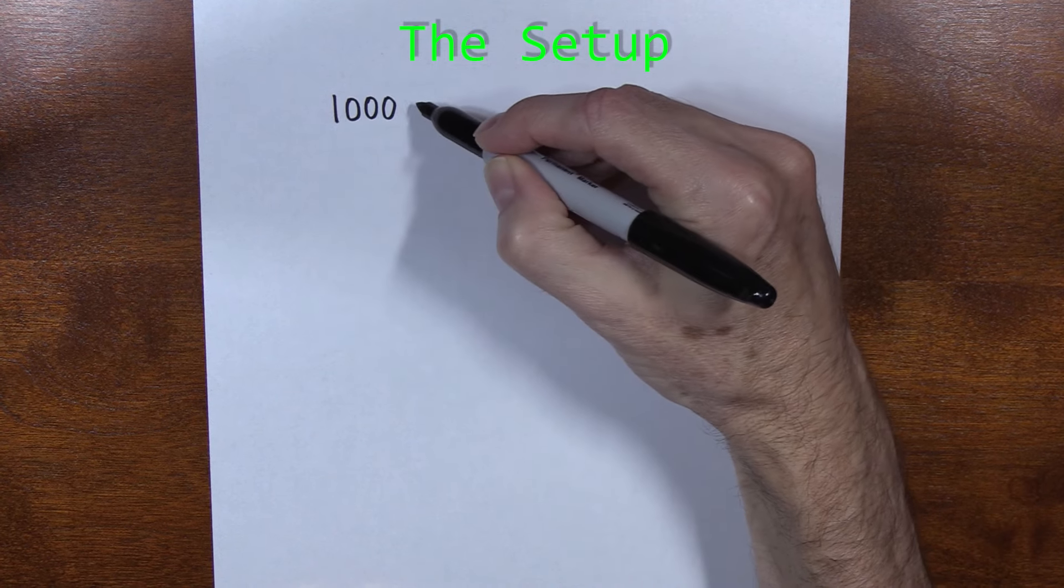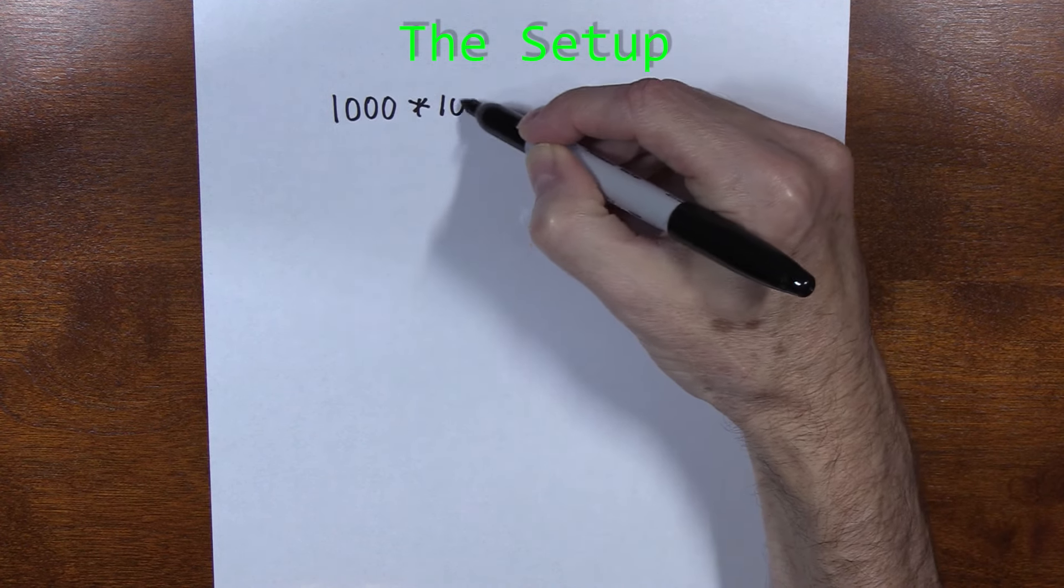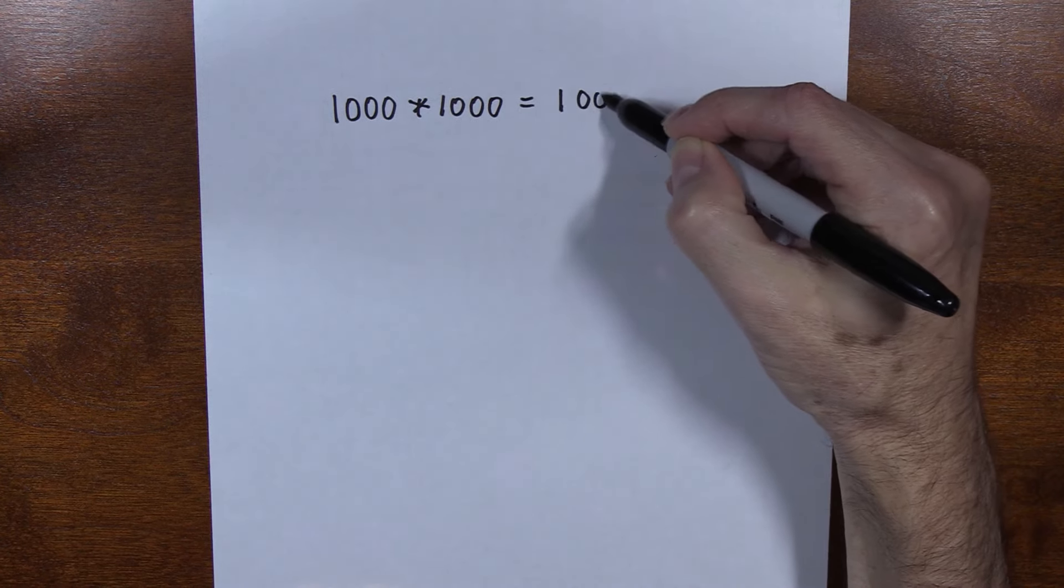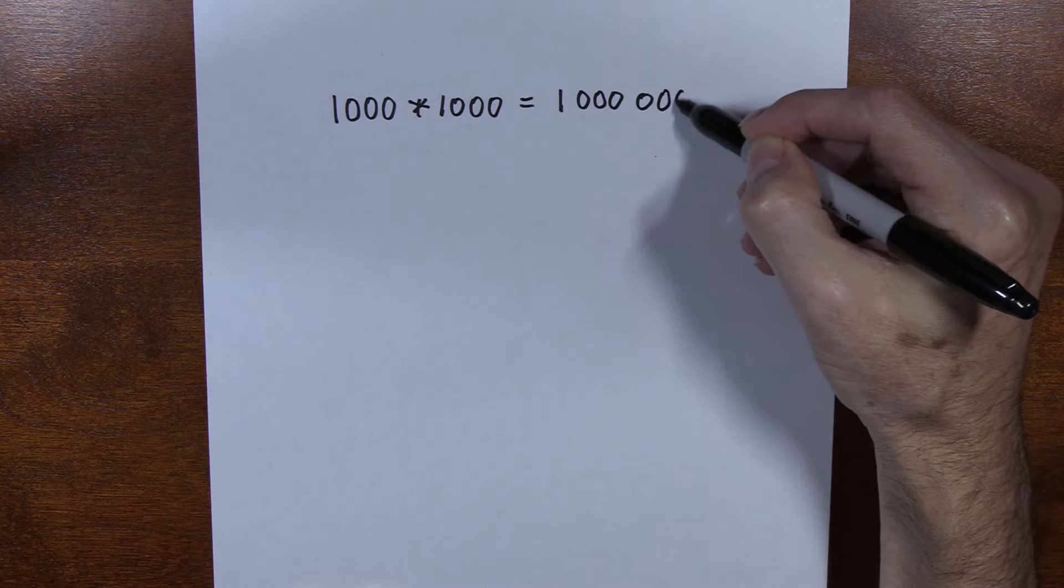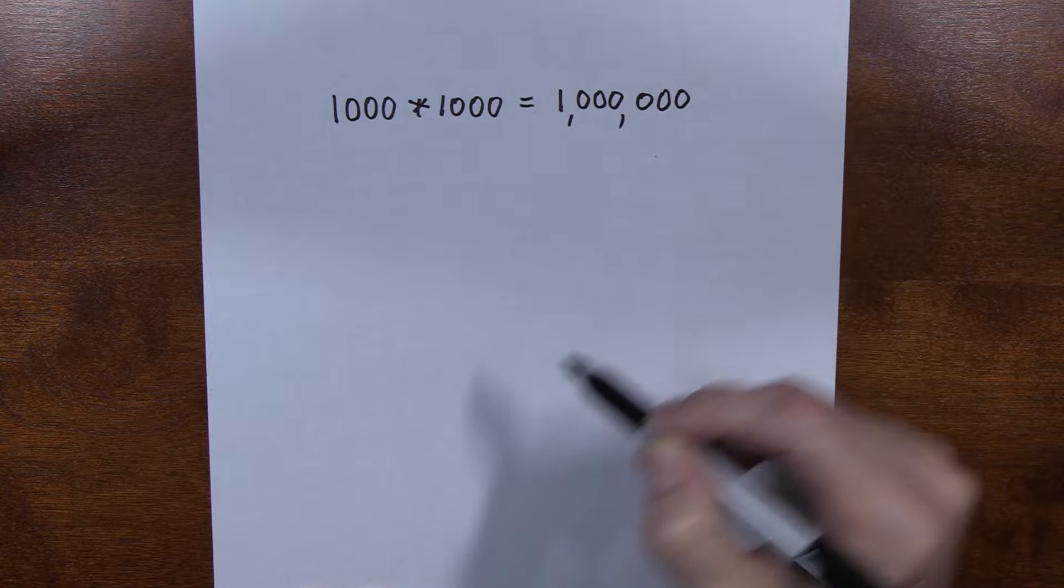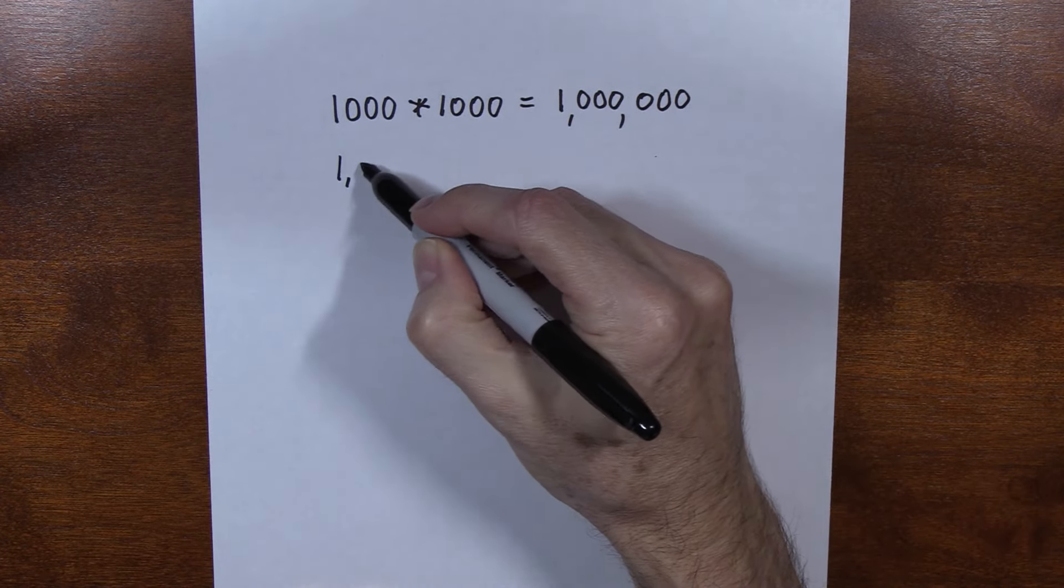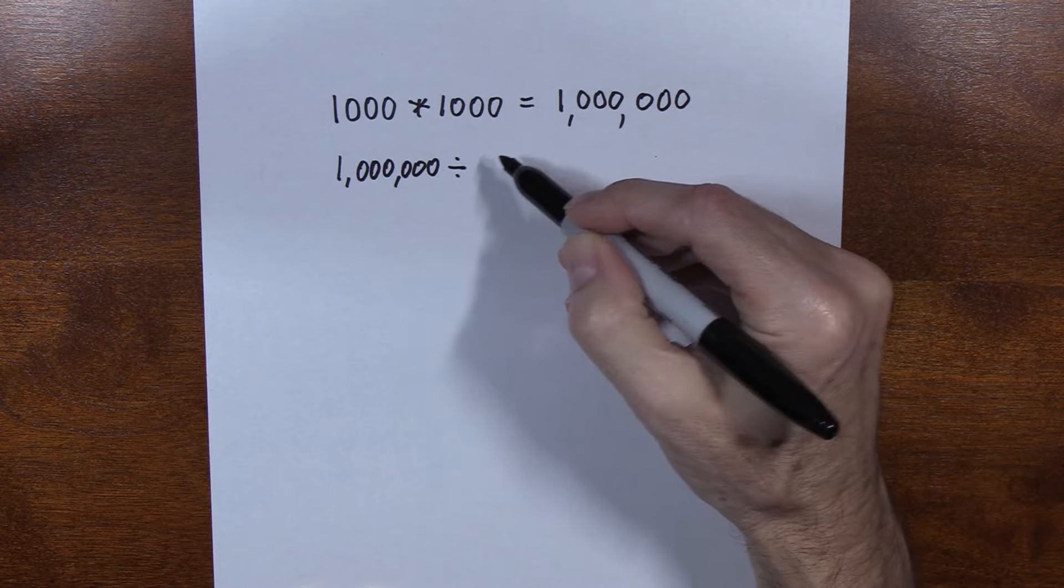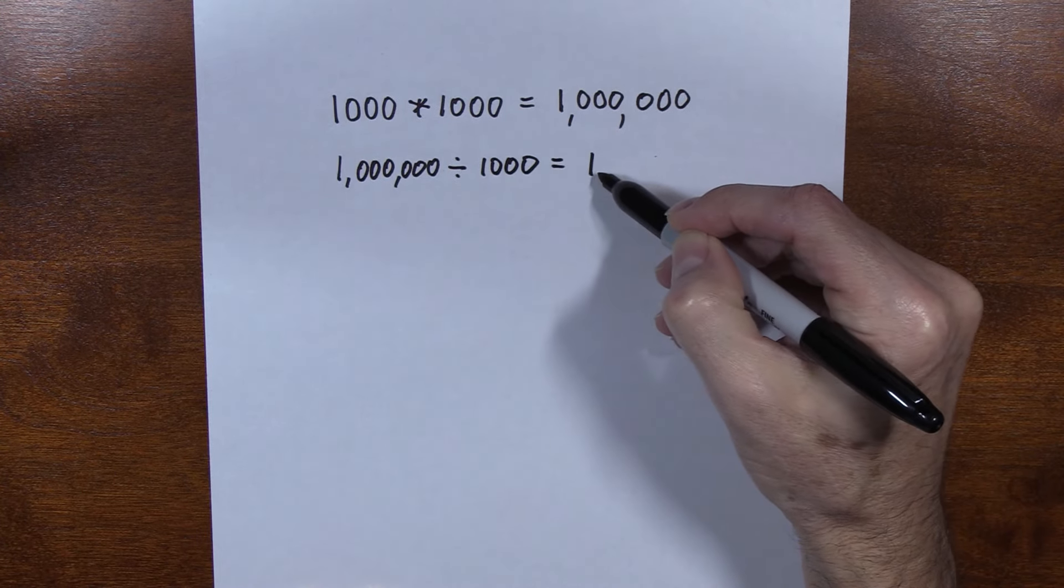If I have a thousand and I multiply by a thousand, I will get one million. So a thousand times a thousand is a million. Therefore, one million divided by one thousand is a thousand.